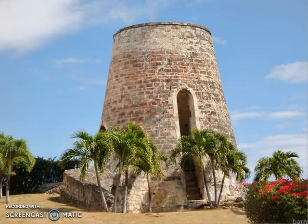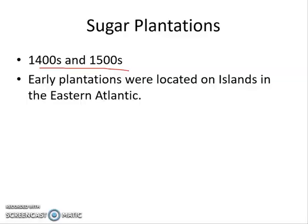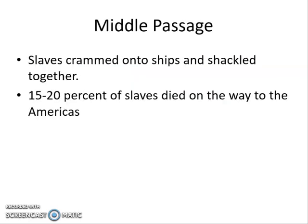What they started doing is they started bringing over Africans to work on sugar plantations that were established well before the Africans were brought over, but they were brought over to replace the Native Americans as workers because the Native Americans were dying. Africans had been exposed to European disease and had immunity. They were brought over on the Middle Passage, crammed onto these ships, with 15% to 20% mortality on the way over.